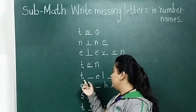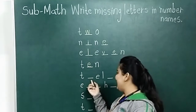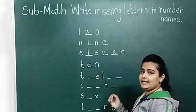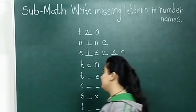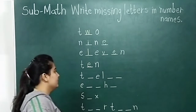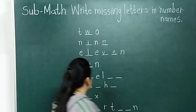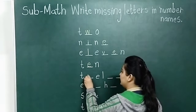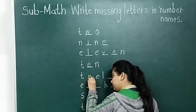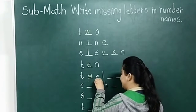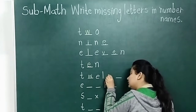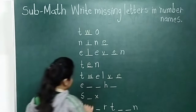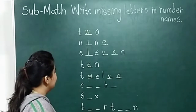Now next. T, dash, E, L, dash, dash. Which number name is this? Twelve. T is written, so we write W, E, L, V, E. T, W, E, L, V, E — twelve.